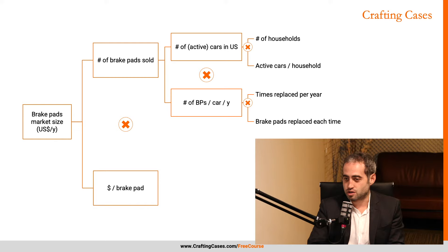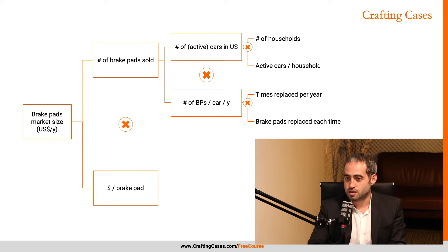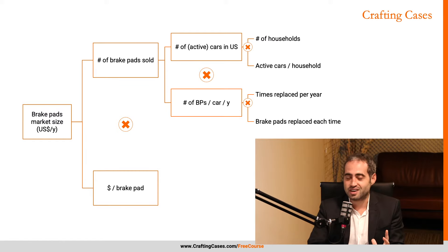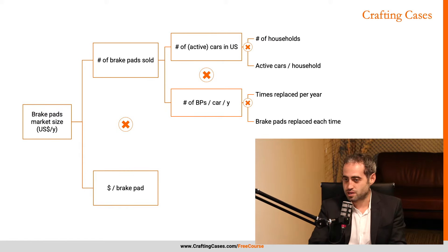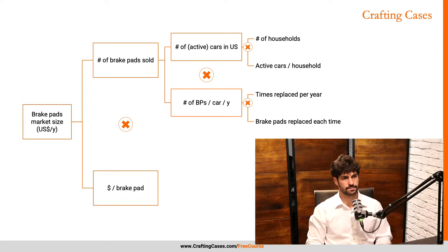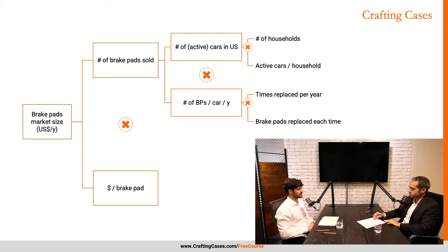To estimate the number of brake pads per car per year, the first variable I'd need is how many times on average do people replace their brake pads per year — could be more or less than once. Then I'd multiply that by the number of brake pads replaced each time. You mentioned there are two per wheel, so I'd assume eight brake pads per car, though I'm not sure if they'd replace all of them at once — but that kind of makes sense on average, because you brake all wheels at once.